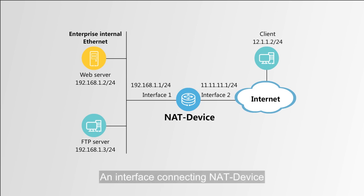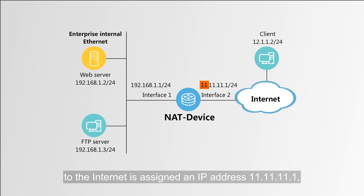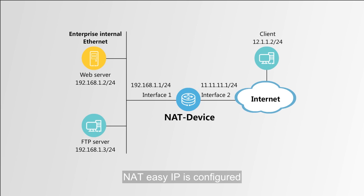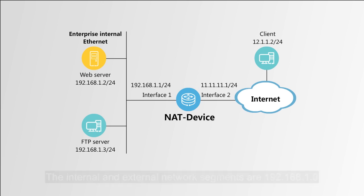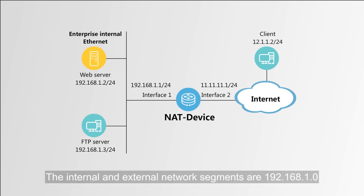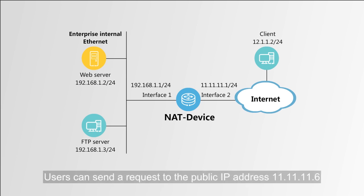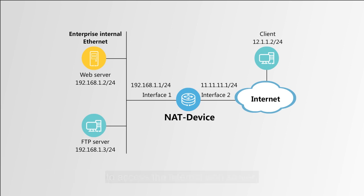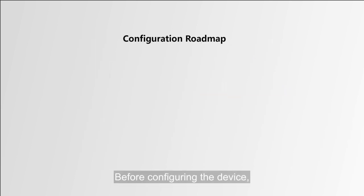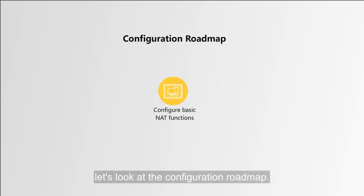An interface connecting the NAT device to the internet is assigned the IP address 11.11.11.1 with a 24-bit mask. NAT EasyIP is configured to reuse this interface IP address in an IP address pool. The internal and external network segments are 192.168.1.0 and 12.1.1.0, respectively, each with a 24-bit mask. Users can send a request to the public IP address 11.11.11.6 to access the internal web server. Before configuring the device, let's look at the configuration roadmap.